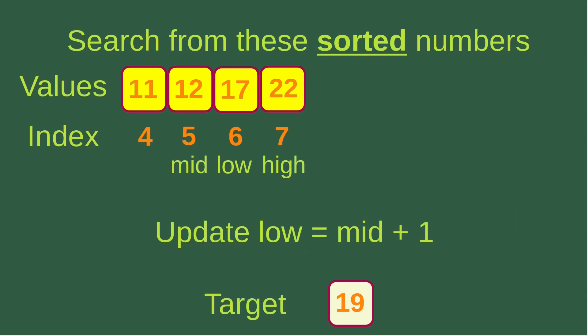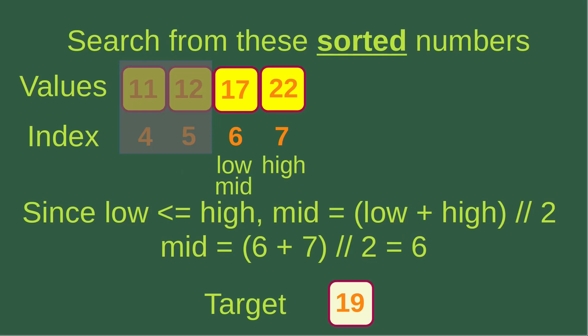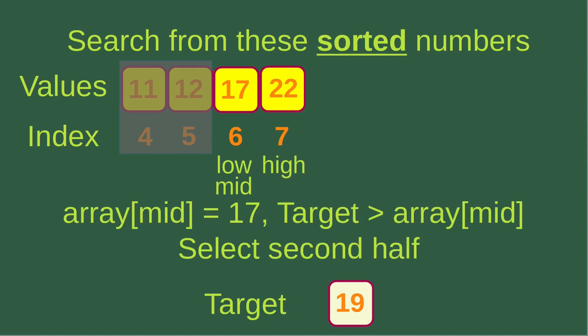To determine the right-hand part, we update the low index to mid plus 1, so now the low index becomes 6. The low index is still smaller than or equal to the high index, so we can still use the formula to find out the mid-index, which is equal to 6 — so the mid-index is equal to the low index. The mid-index corresponds to a value of 17, which is still smaller than our target, so we have to choose the second half of the remaining portion.